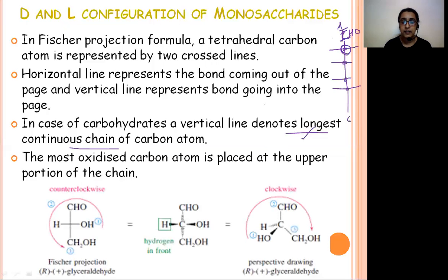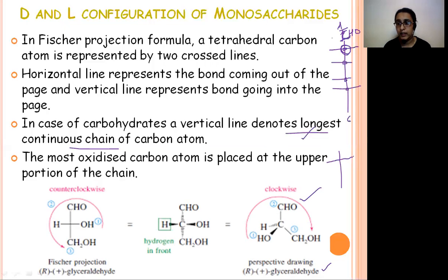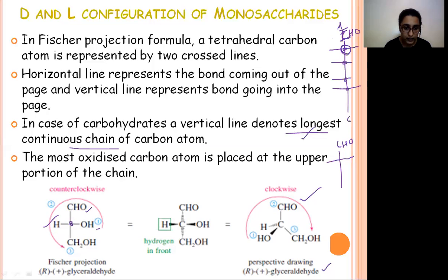This is glyceraldehyde — it is an aldotriose. In its Fischer projection formula, CHO comes at the top, then the chiral carbon (asymmetric carbon atom) at the intersection, with OH on one side and H on the other, and CH₂OH at the bottom. This is the flying wedge formula for glyceraldehyde, where the bond to H is away from the observer, the OH is towards the observer, and CHO and CH₂OH are in the plane.